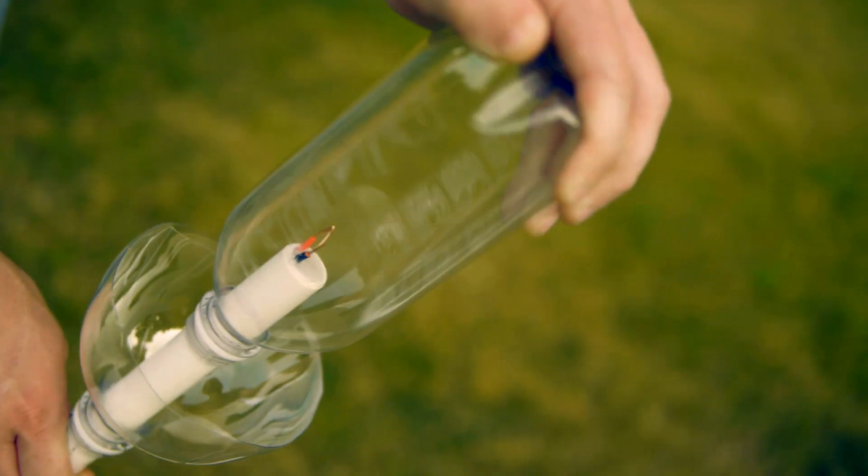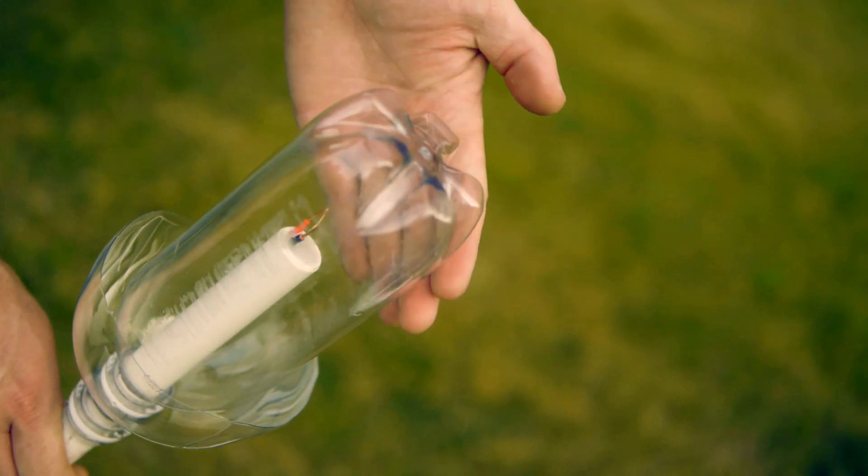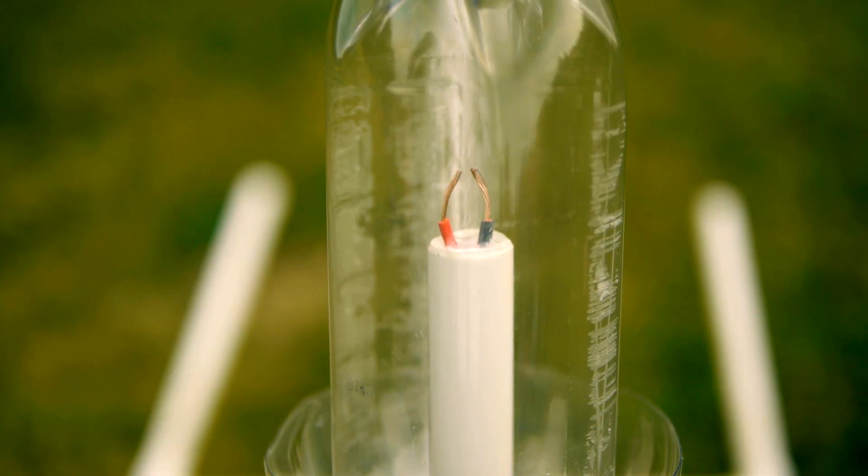The alcohol rocket fuel is contained inside the bottles as they're prepared for launch. The rocket launcher itself only needs to provide a spark for ignition.